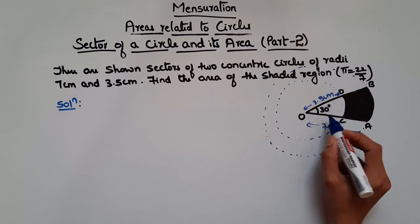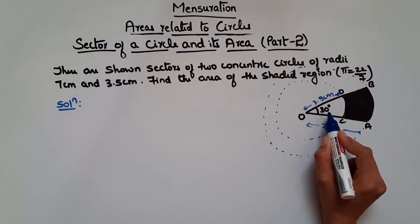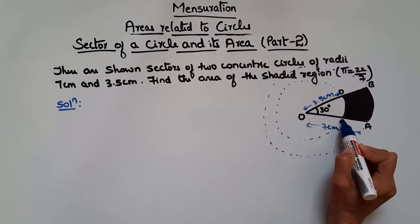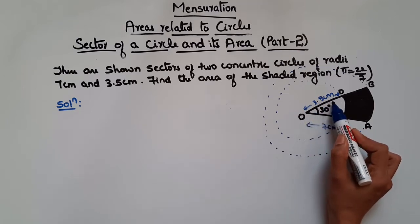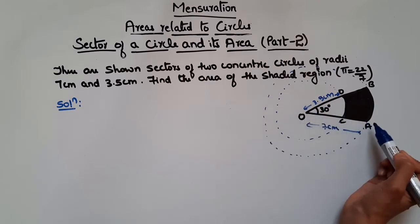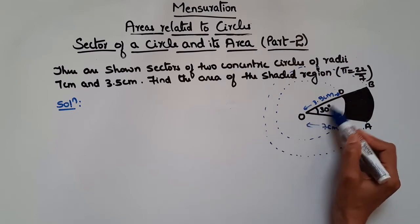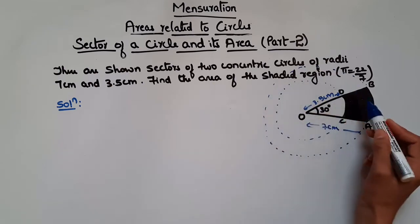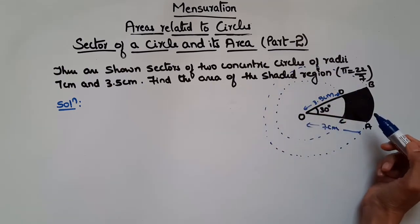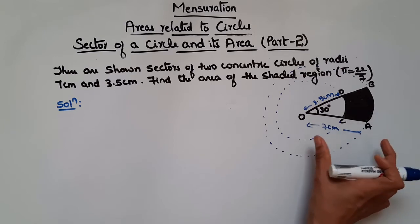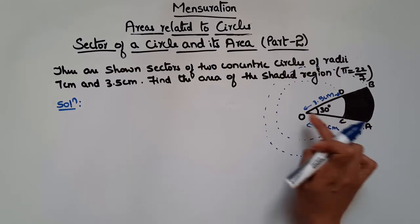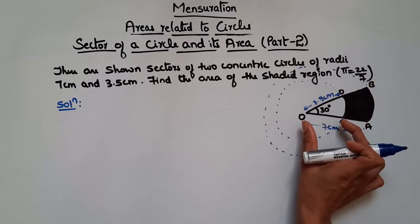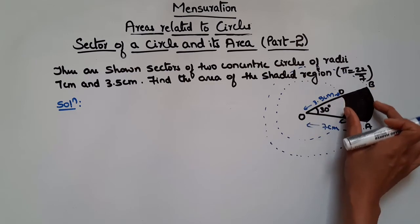For both the circles, angle theta is 30 degrees. For the smaller circle, the sector is DOC. DOC is the sector of the smaller circle and the sector of the bigger circle is AOB. They have asked to find the area of the shaded region only, so we have to take the total area of sector AOB minus the area of the smaller sector.